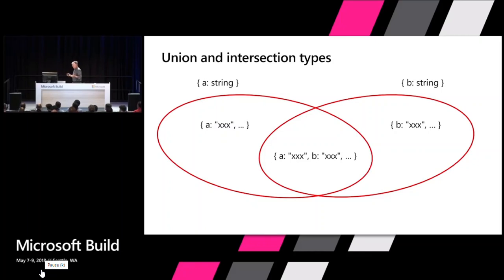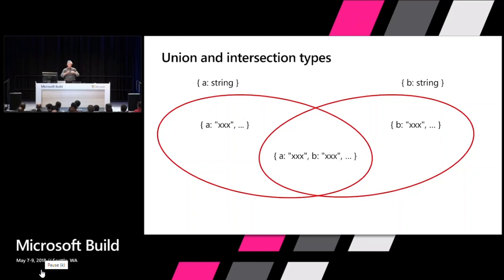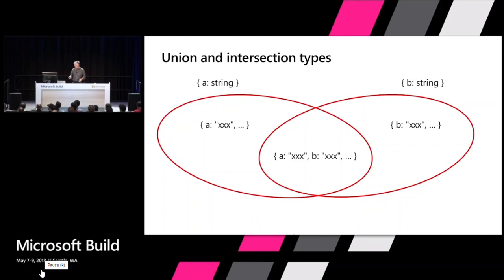Some people have wondered why intersecting two object types gives you a union of the property names. It's because you're actually constraining it more — for every property declaration you add there are fewer possible values. The most possible values is an empty object with no constraints, and the more declarations you add the more you're constraining the values and the smaller the set gets. That's why it's called an intersection.